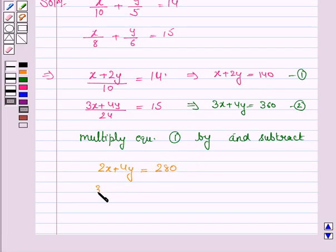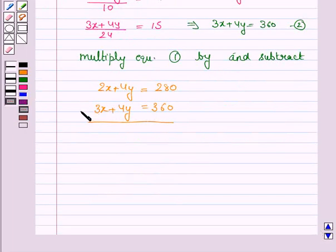So 2x minus 3x plus 4y gets cancelled with minus 4y, and 280 minus 360 is minus 80. So this implies x is equal to 80.